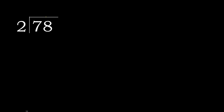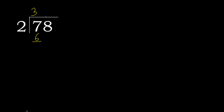78 divided by 2. 2 is not less than 7, therefore: which number multiplied by 2 is nearest to 7 but not greater? 2 multiplied by 4 is 8 — 8 is greater. 2 multiplied by 3 is 6 — 6 is not greater. 7 minus 6 is 1.